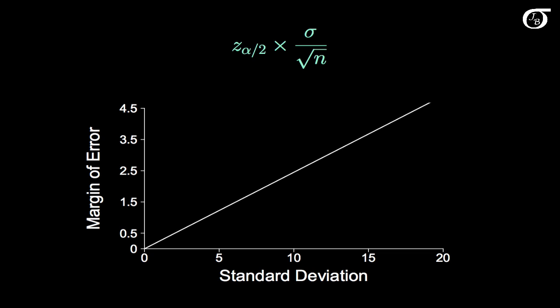We can see here that sigma, the standard deviation, is in the numerator, and that the margin of error increases linearly with the standard deviation sigma. And so all other factors being equal, a doubling of the standard deviation would result in a doubling of the margin of error.